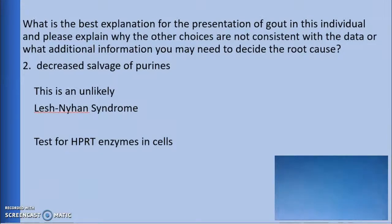The second option is decreased salvage of purines. This is not a likely answer. Lesch-Nyhan syndrome is a common example of decreased salvage of purines. Neurological symptoms are present with Lesch-Nyhan syndrome, and symptoms first occur in children, although it is possible they will not appear until the late teen years or early adulthood. It's not likely that this is the issue for this 47-year-old patient. However, the absence of HPRT enzyme in cells from any tissue can be used to confirm or rule out this diagnosis, so a biopsy would be needed.